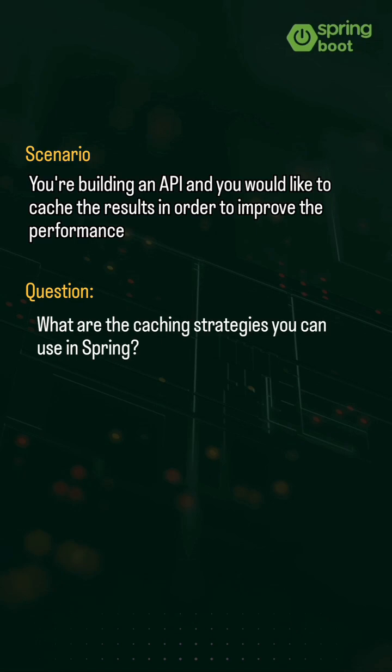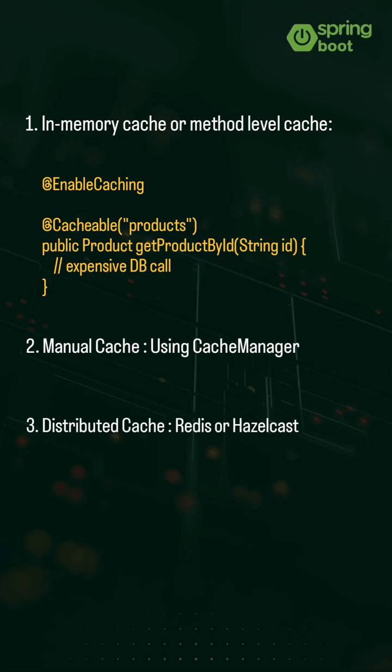The first one is in-memory cache, or method-level cache. You can enable it using @EnableCaching at the configuration level and @Cacheable annotation at the method level. By default, Spring uses an in-memory cache like ConcurrentHashMap. This works well for monoliths or small-scale APIs.